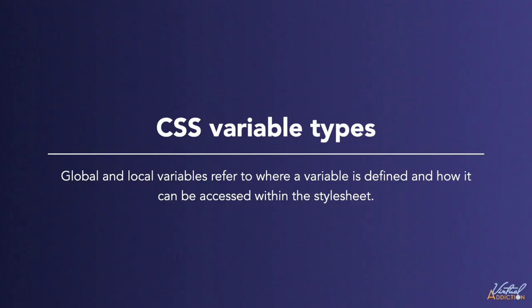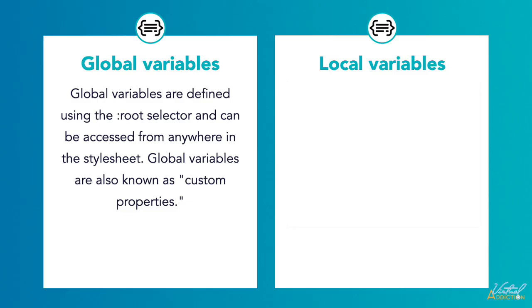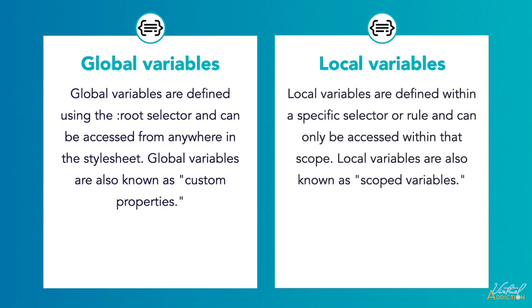Global and local variables refer to where the variable is defined and how it can be accessed within the stylesheet. Global variables are defined using the `:root` selector and can be accessed from anywhere in the stylesheet — they are also known as custom properties. Local variables, on the other hand, are defined within a specific selector or rule and can only be accessed within that scope. Local variables are also known as scoped variables.